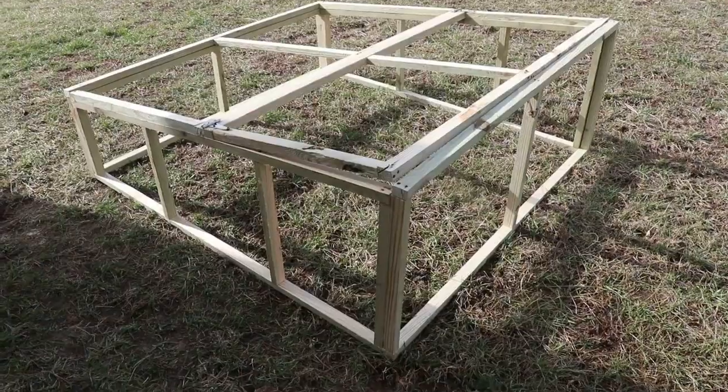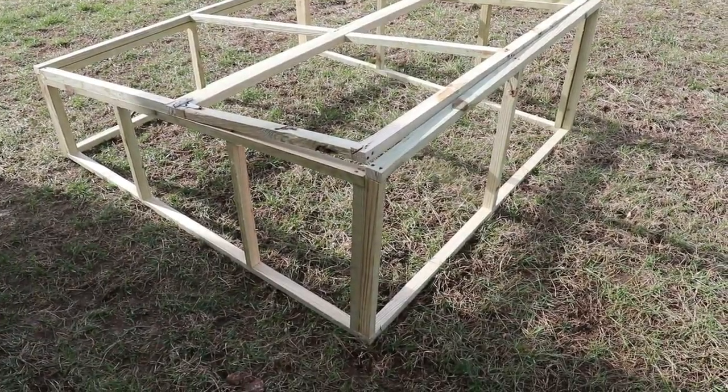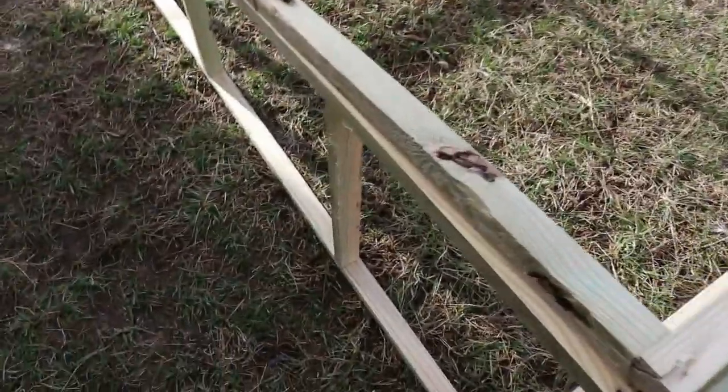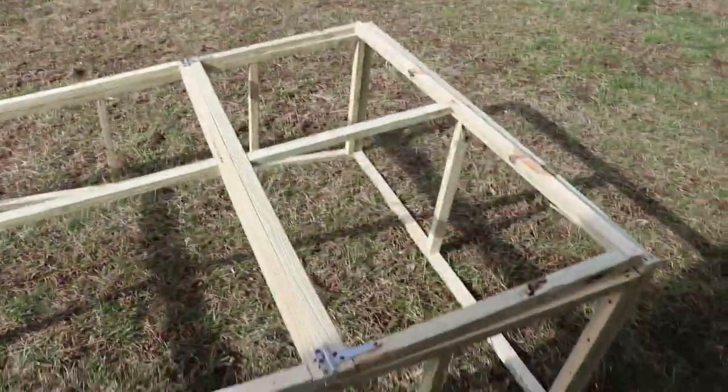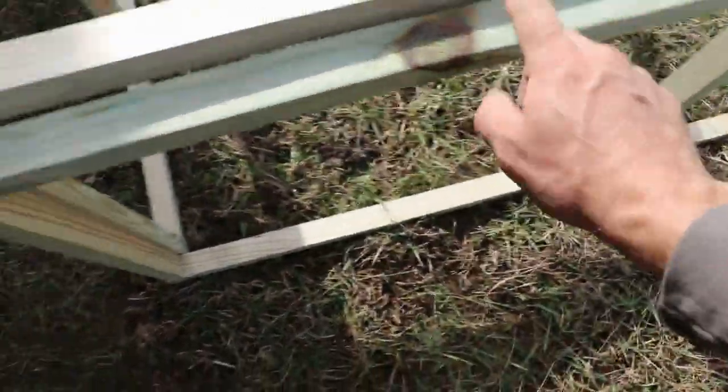So how this is all put together—it's a real simple system. Each one of these ends here and here, and then the top and the end piece here, is all basically a square. So the first one that we're going to focus on building is the front side here. Very easy. This is the piece that we're going to work on.